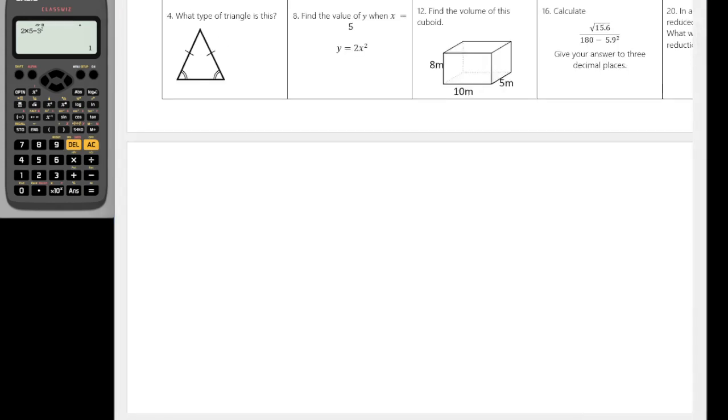Okay, what type of triangle is this? So we've got 2 equal sides, 2 equal angles. So that's going to be an isosceles triangle. And that's our first row.